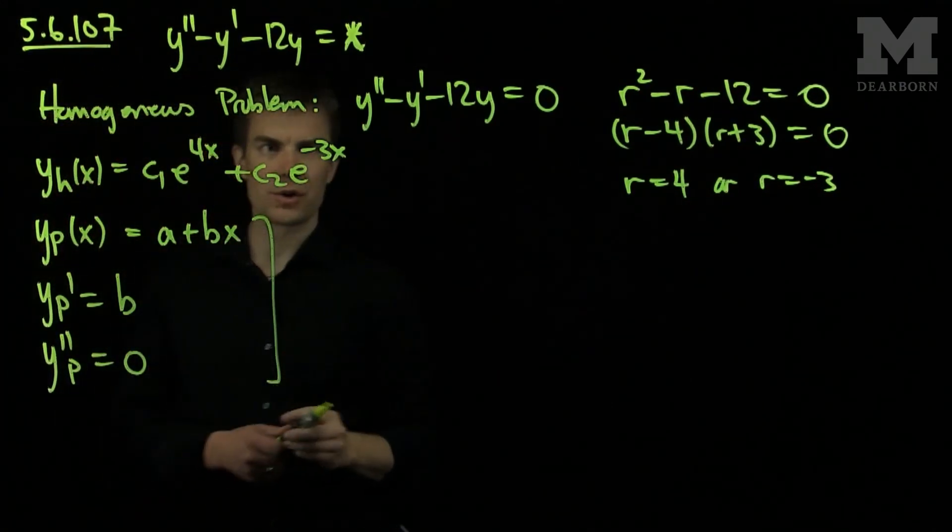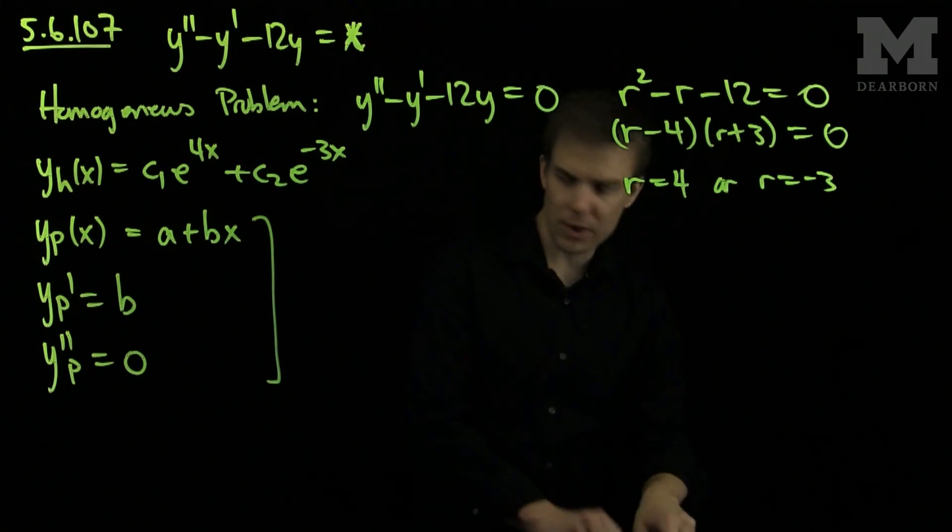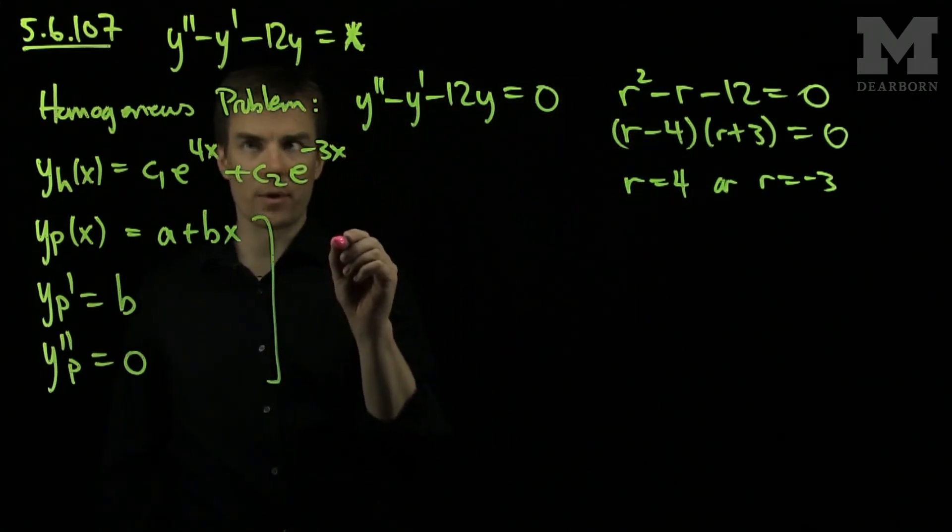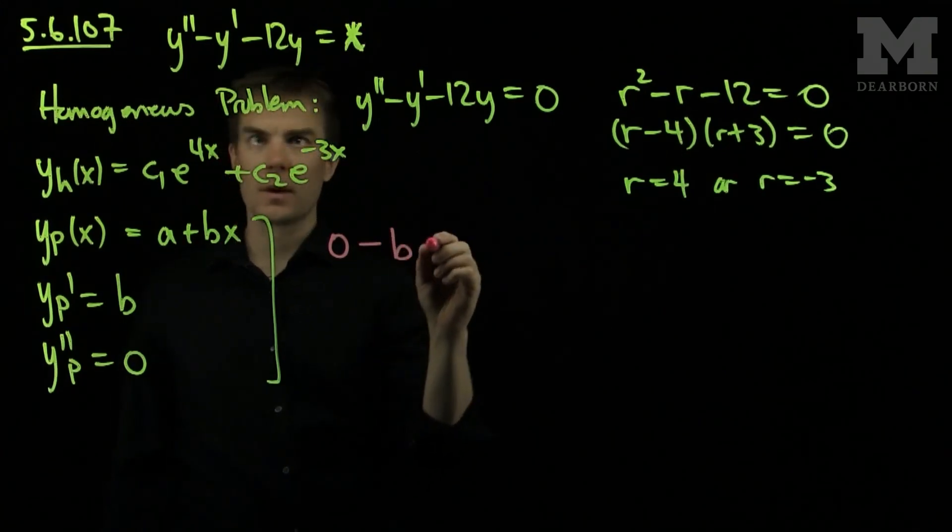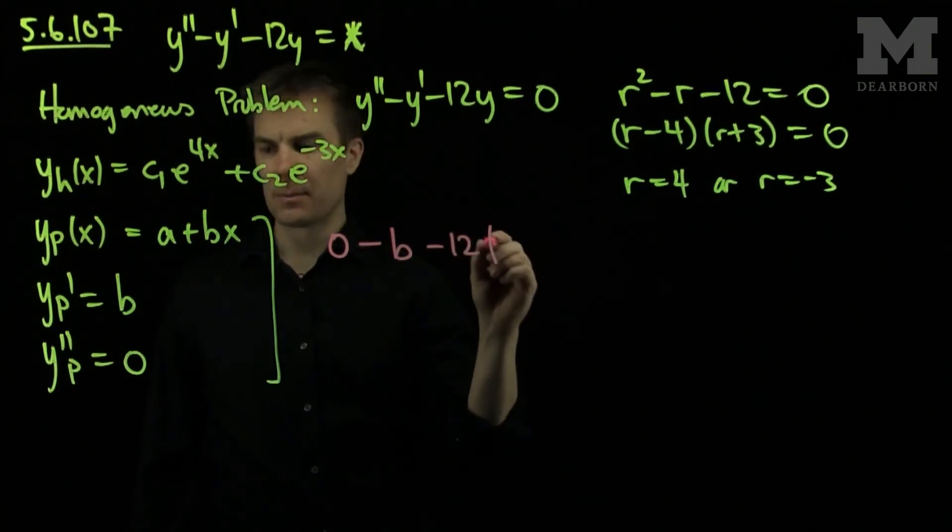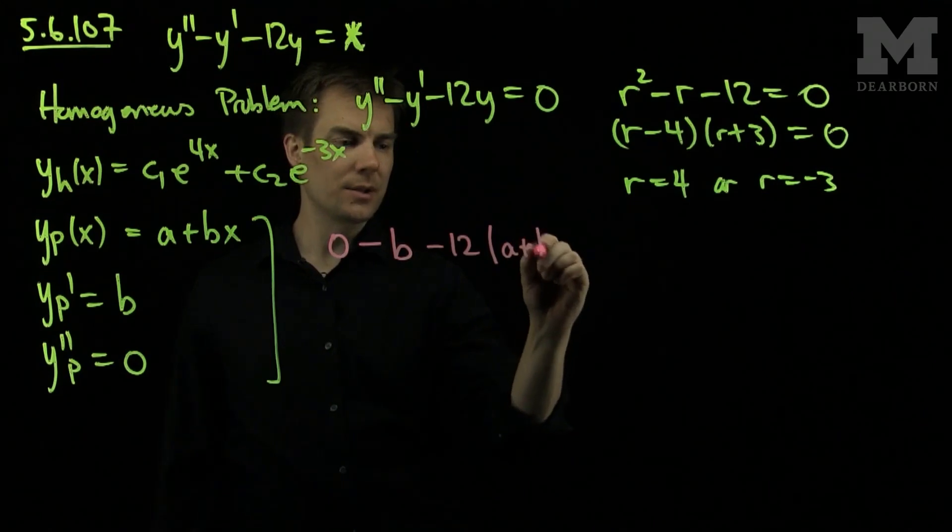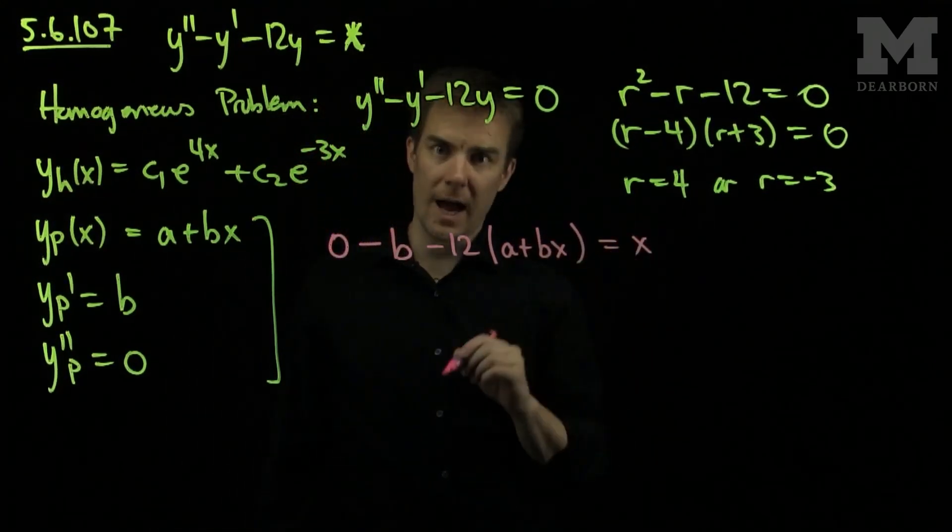Now we plug in this information into the problem and check. So we have y double prime, which is zero, minus y prime, which is b, minus 12 times y, which is a plus bx. I'd like this to be equal to x.